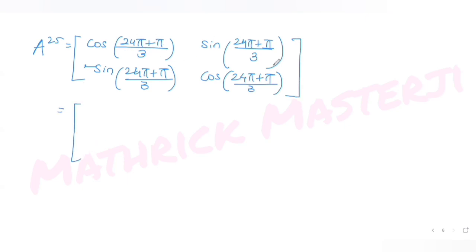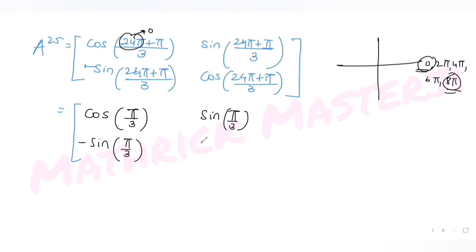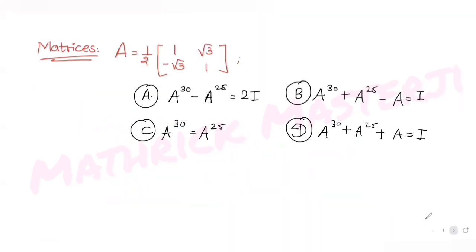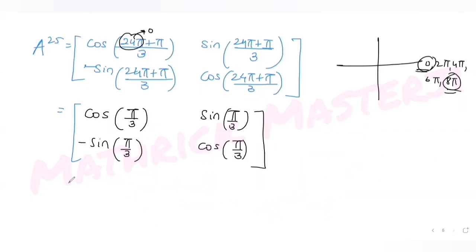So cos(24π/3 + π/3) = cos(8π + π/3) = cos(π/3), and similarly for sine. All four elements reduce to exactly the same values as in matrix A. Therefore A raised to 25 equals A.